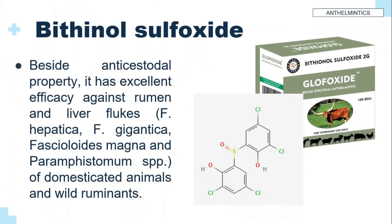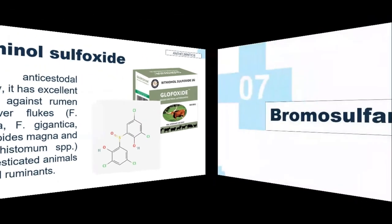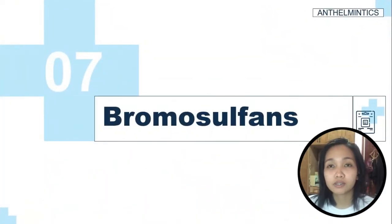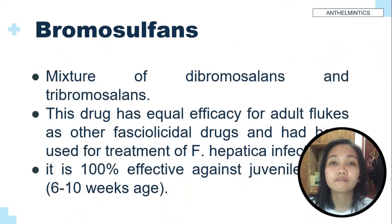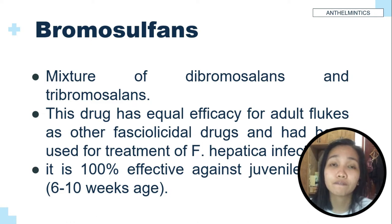Bithionol sulfoxide: besides its anticestodal property, it has excellent efficacy against rumen and liver flukes of domesticated animals and wild ruminants. Bromosulfans is a mixture of dibromosalins and tribromosalins. This drug has equal efficacy for adult flukes as other fasciolicidalidal drugs and has been used for treatment of Fasciola hepatica infections.